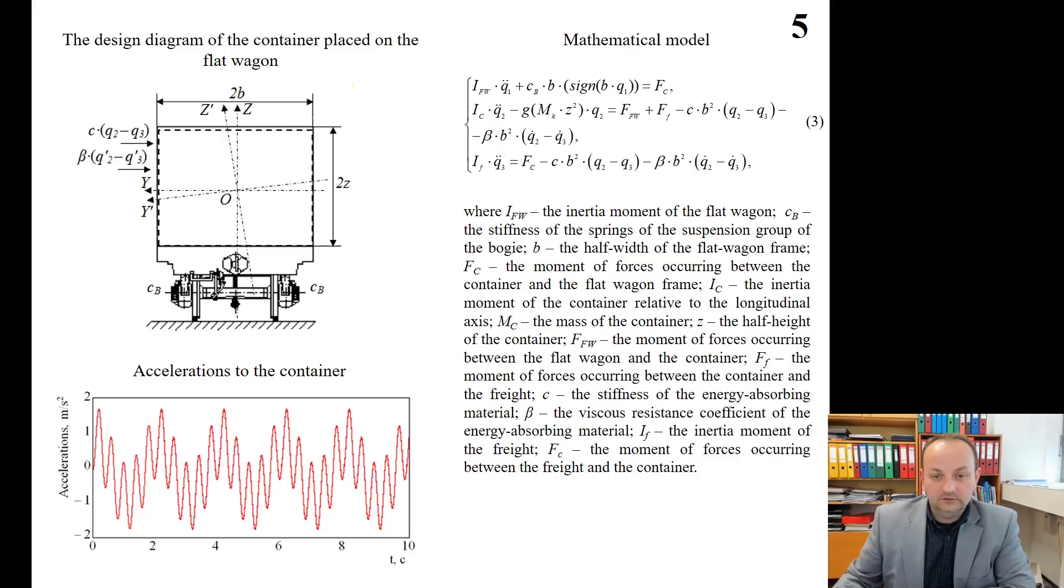Based on the calculation, it was found that the maximum accelerations to the container is of 1.7 meter per square seconds. The volume of acceleration obtained was almost 5% lower than the acceleration acting to a container with a typical design. The calculation was made at the stiffness coefficient of the energy absorbing material of 1.5 kN per meter and the viscose resistance coefficient of 2 kN per meter. These parameters were determined by a subsequent section and it was identified that the accelerations were within the permissible volumes.